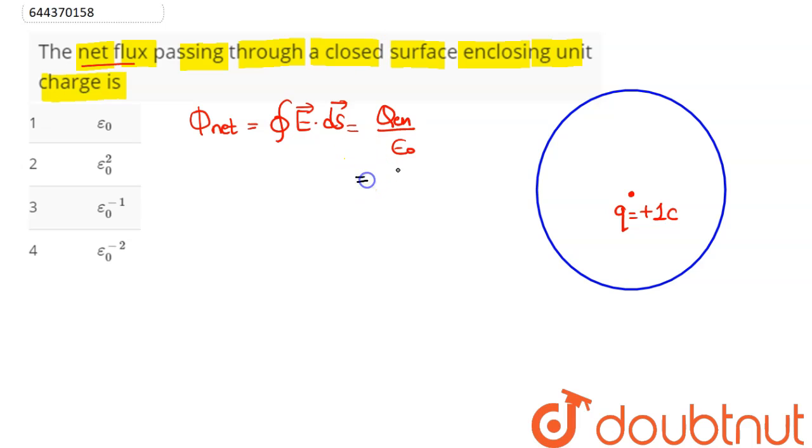Now here, since the charge is of unit value, hence we can say here the magnitude of charge is one coulomb divided by epsilon naught. Hence the flux comes as one upon epsilon naught, means we can say as epsilon naught inverse, which here is option number three. Hence we can say three is the correct answer.